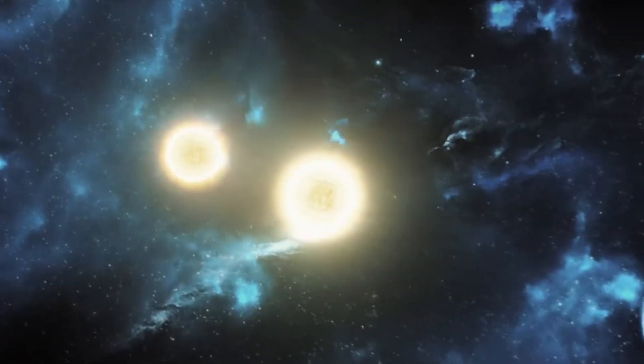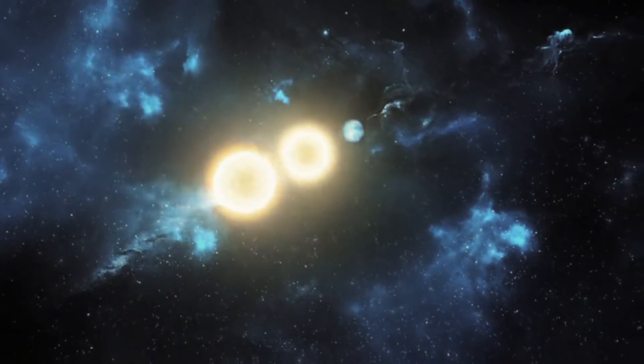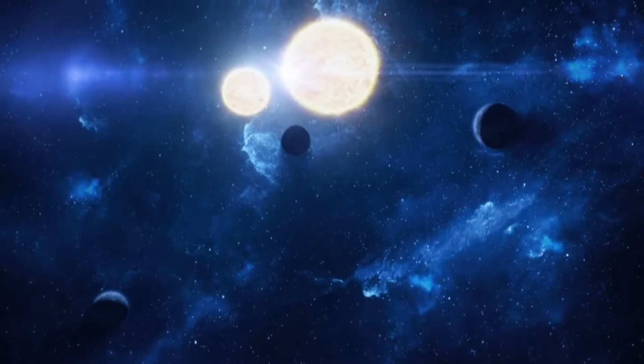For a side note, a binary system is one in which two stars orbit around one another, just like the planets of our solar system orbit our sun.